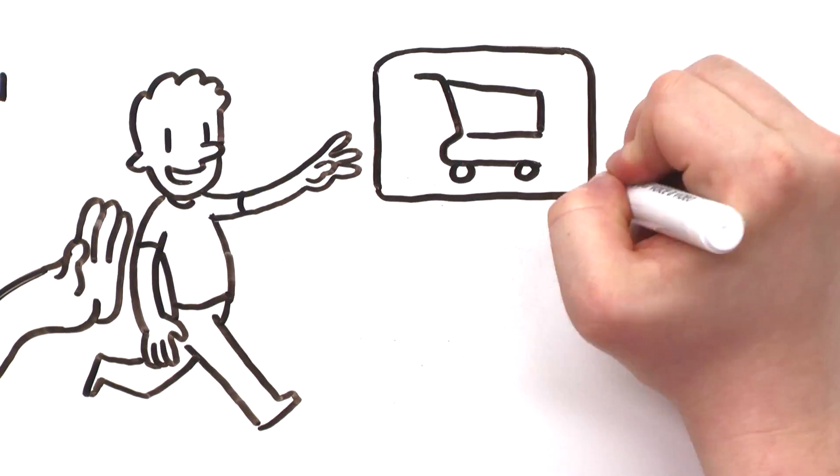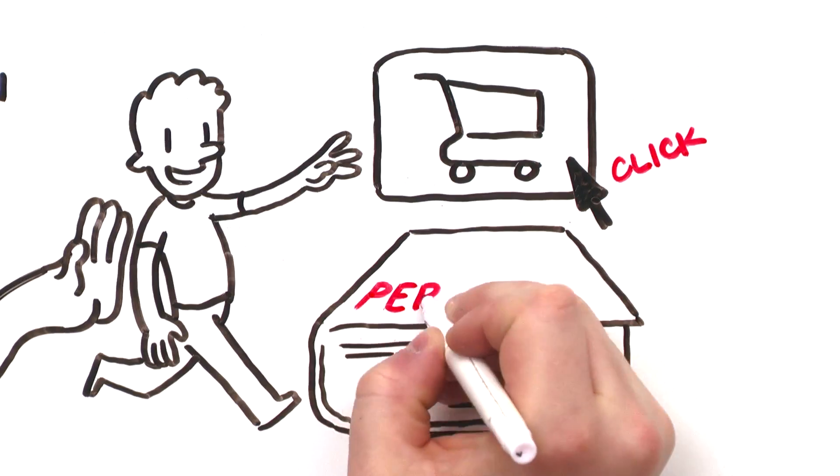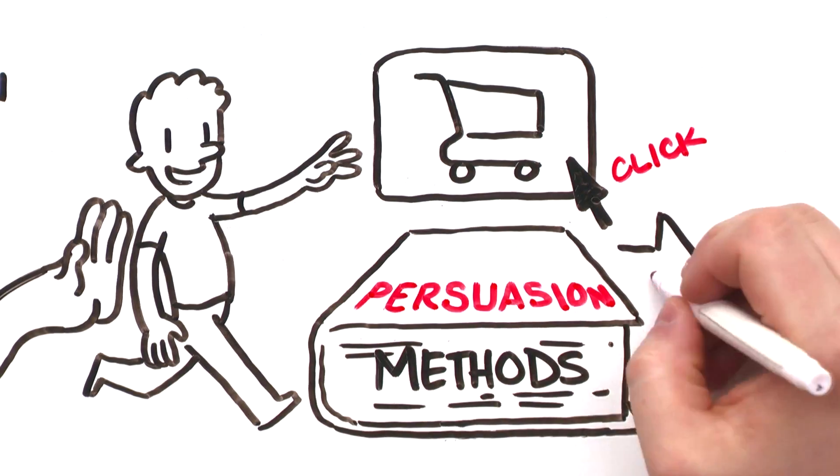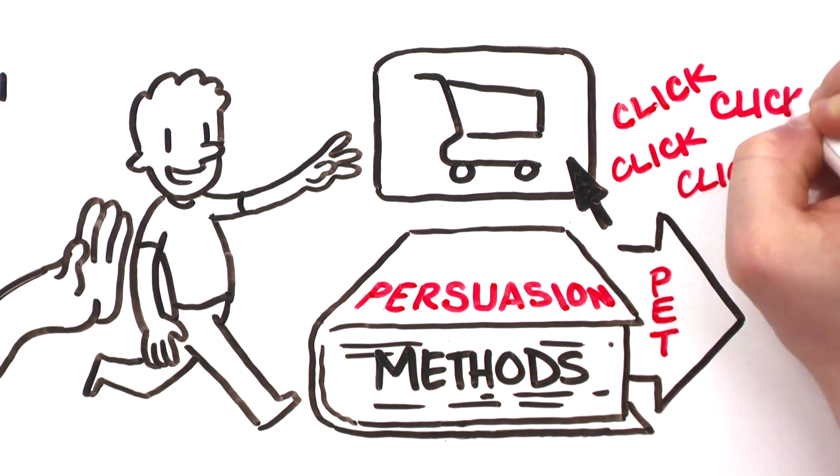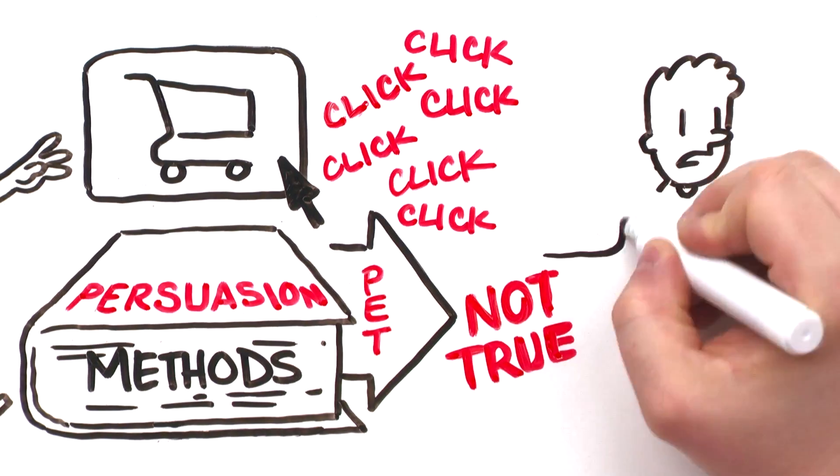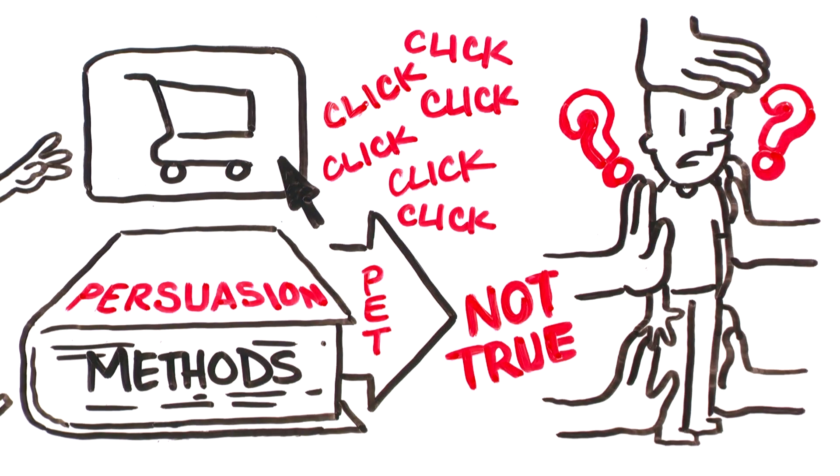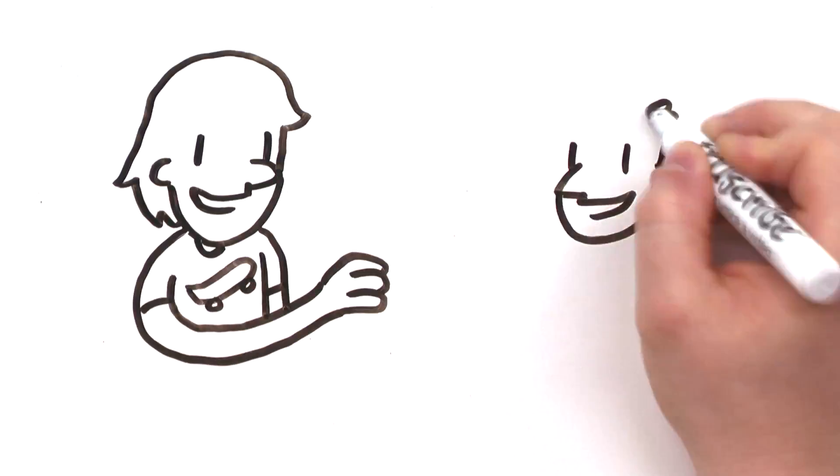And increase their conversion. So it's natural to think that more persuasion methods is good—lots of persuasion methods will result in lots of conversion. But it's not true. Using lots of methods results in persuasion clutter.